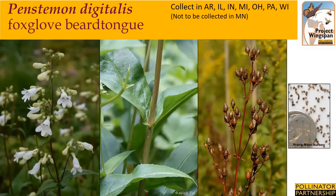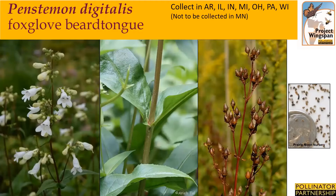Penstemon digitalis, or foxglove beardtongue, can be found in mesic black soil prairies, openings in upland and floodplain forests, woodland borders, thickets, savannahs, and acid gravel seeps. The plant can grow to be up to three feet tall. The leaves are medium green, sometimes with reddish tints, variable in shape but tending to be ovate or broadly lanceolate, and are up to six inches long and two and a half inches wide. The opposite leaves on the stalks are more lanceolate than the basal leaves, with edges that often have tiny teeth and a shiny leaf surface. The white flowers occur in an open panicle at the top of each flowering stem, blooming during late spring or early summer for about a month. Collection time is usually late summer into fall. The seeds ripen in upright capsules that turn from green to brown when ready to harvest. Cut the capsules from the stem and place the entire capsules into your collection bag.